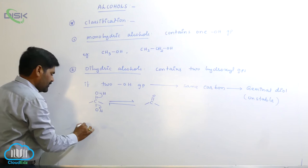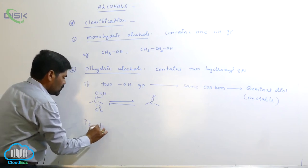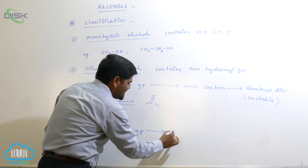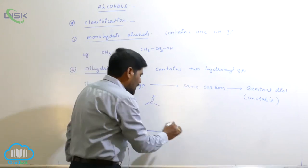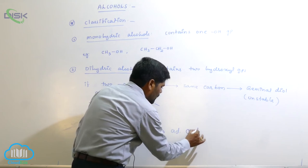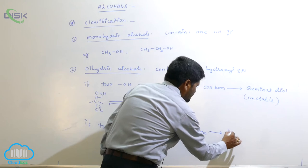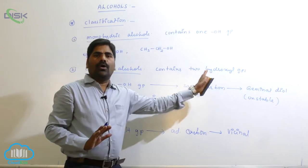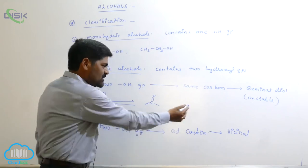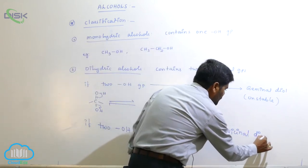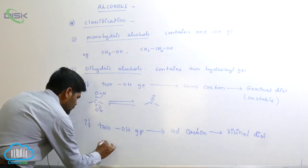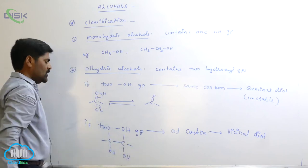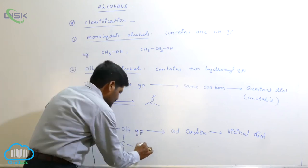The second type of dihydric alcohol is when two OH groups are present on adjacent carbon atoms. These are known as vicinal dioles. Vicinal means two OH groups on adjacent carbons, while geminal means two OH groups on the same carbon.